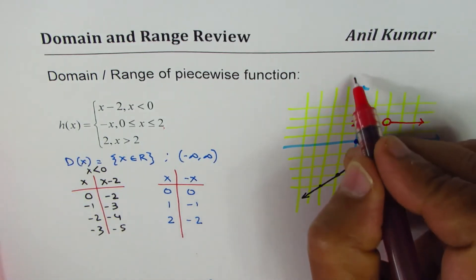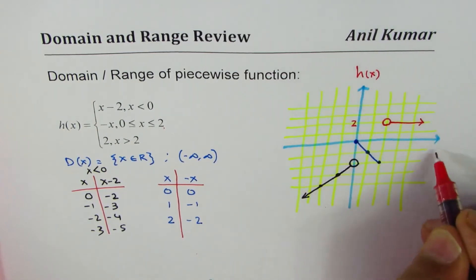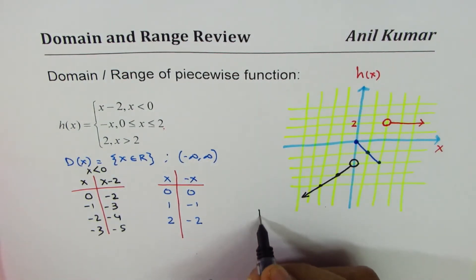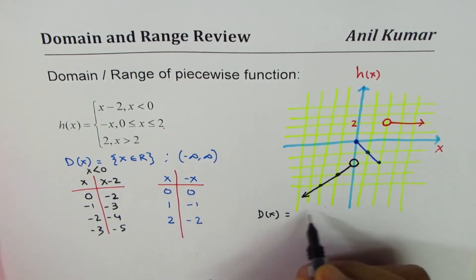So this is h(x) for us and that is x for us. Now once you have a graph you can easily write down domain and range. So I'd like you to pause the video, write down the answer and then check with mine.